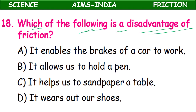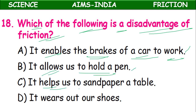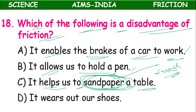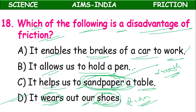Eighteenth question: Which of the following is a disadvantage of friction? Brakes of a car working — advantage. Holding a pen — advantage. Sandpapering a table (carpenters rubbing sandpaper on furniture to make it smooth) — advantage. Wearing out our shoes — this is the disadvantage. Because of friction and more usage, the bottom part of shoes wears out and we have to buy new ones. Answer: option D.